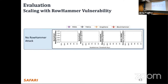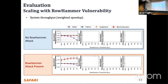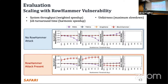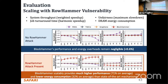We conducted a scalability study with worsening Rowhammer vulnerability for both the no-attack and attack-present cases, scaling the Rowhammer threshold from 32K down to 1K on the x-axis. We show results for system throughput, job turnaround time, unfairness, and DRAM energy consumption. BlockHammer's performance and energy overheads remain negligible even when the Rowhammer threshold is scaled down to 1K, and BlockHammer's scalability provides much higher performance and lower energy consumption than state-of-the-art mechanisms when a Rowhammer attack is present.